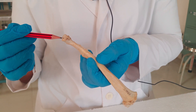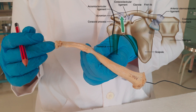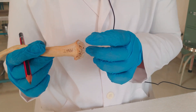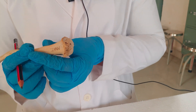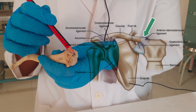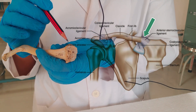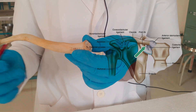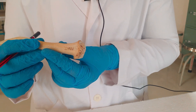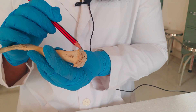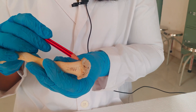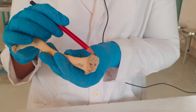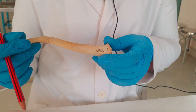The acromial end is flattened from above downwards and its articular surface gives attachment to the acromion process of the scapula, forming the acromioclavicular joint. The margins give attachment to the joint capsule. The medial end is quadrilateral in shape; its articular surface gives attachment to the manubrium sternum, forming the sternoclavicular joint. The inferior part of the articular surface gives attachment to the first costal cartilage. The margins give attachment to the fibrous capsule, and superiorly it gives attachment to the interclavicular ligament. The articular disc is attached anterosuperiorly.